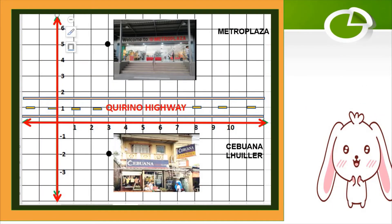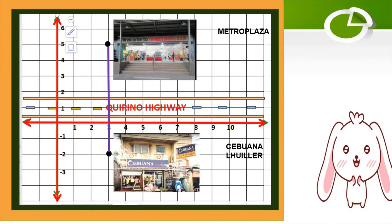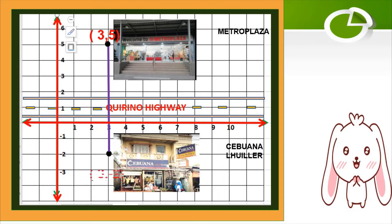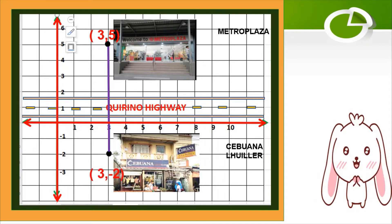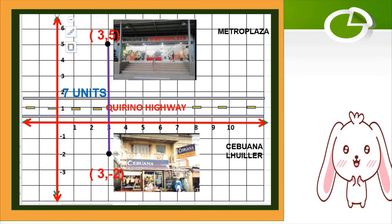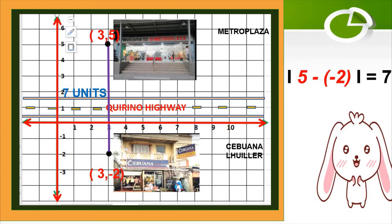Next illustration. What is the distance from Metroplaza to Cebuano-Willier, or from Cebuano-Willier to Metroplaza on this coordinate plane? Metroplaza is at (0,35) while Cebuano-Willier is at (0,3-2). That is 7 units. Just like before, by merely counting the number of units on the coordinate plane, you will find its vertical distance, or find the absolute difference of their y-coordinates.